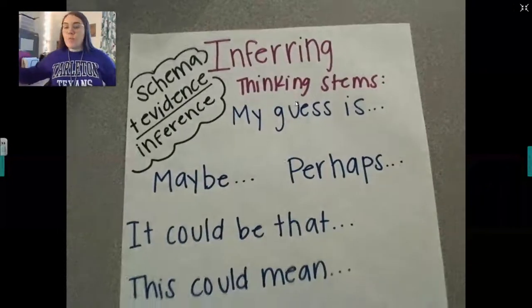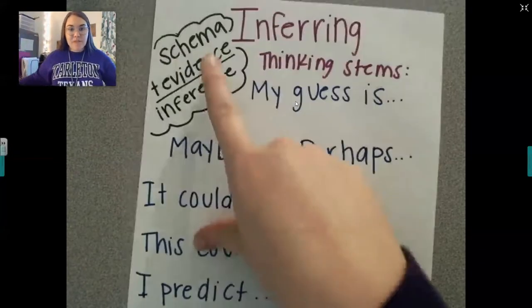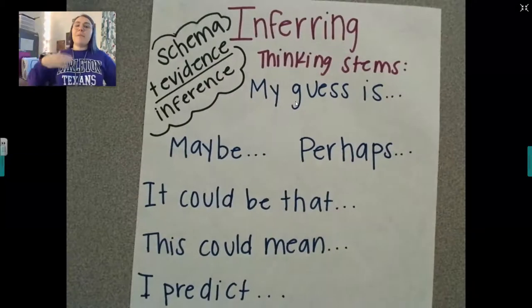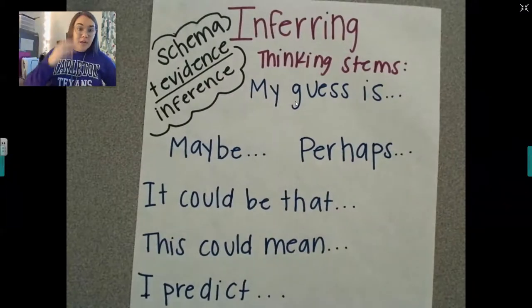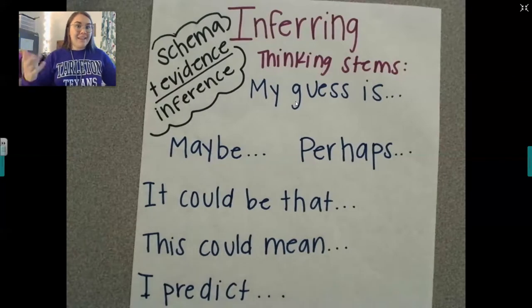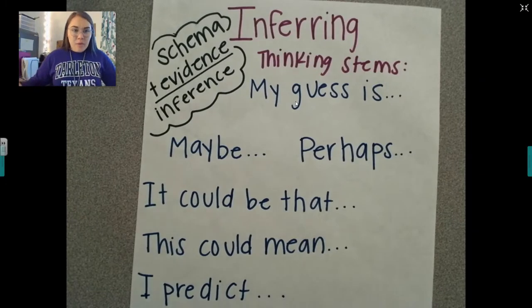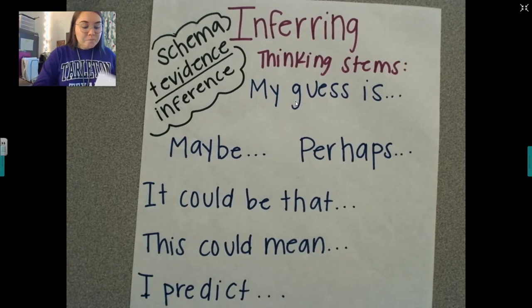Inferencing is when we make guesses and predictions based off of our schema. I know I might not have said that word in a while, but schema is what you know. You make guesses about what's going to happen in a passage or a book as you're reading based on what you already know about the book or from your past experiences.